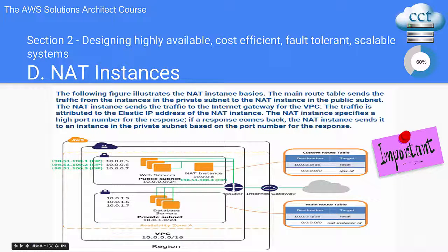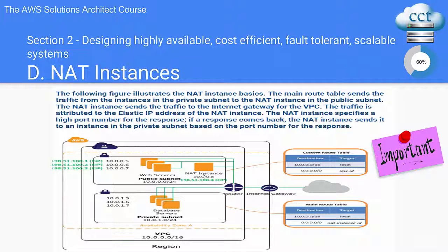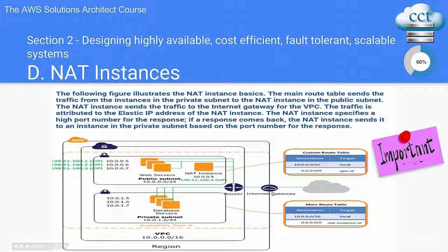Another equally important diagram — very similar to the first one — illustrates the NAT instance basics. The main route table sends traffic from instances in the private subnet to the NAT instance in the public subnet. The NAT instance then sends the traffic to the internet gateway for the VPC. Traffic is attributed to the elastic IP address of the NAT. The NAT instance specifies a high port number for the response, and if a response comes back, it sends it to the instance in the private subnet based on that port number.